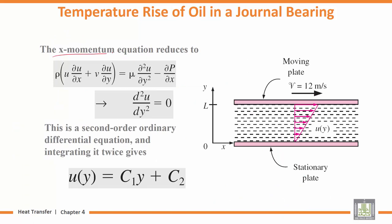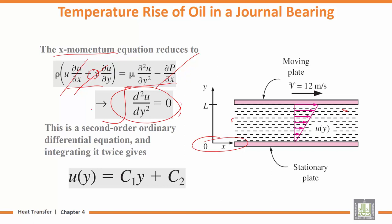Now we take the momentum equation in the x-direction. Since du/dx = 0 and v = 0, those terms vanish. There is also no pressure gradient (dp/dx = 0). The momentum equation reduces to d²u/dy² = 0, giving a linear velocity profile.